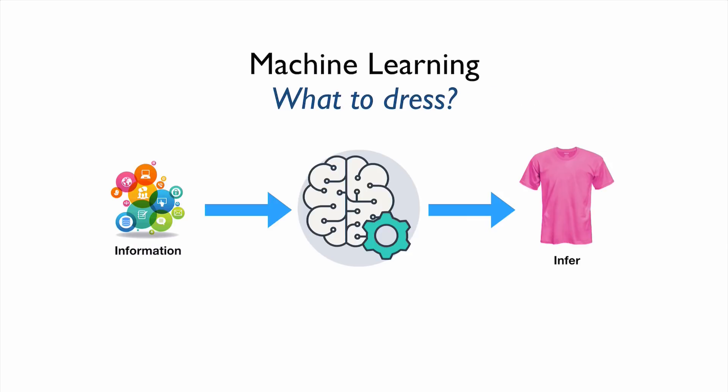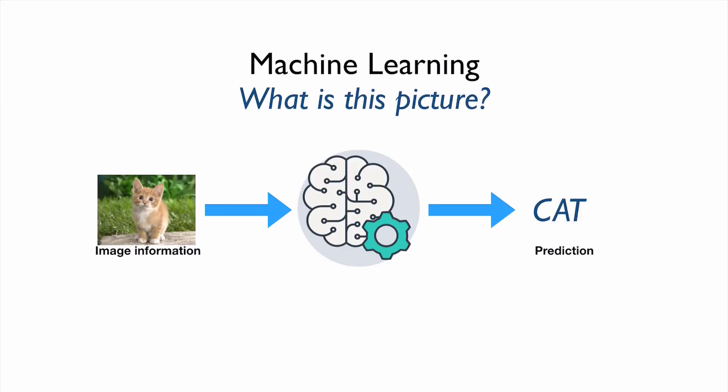Machine learning is exactly the same thing. We want to do exactly the same thing, but using machines. That is machine learning. For example, here, what to dress? We're going to provide a lot of information about it, and then this machine learning can predict or infer the output. Image, same thing. We're going to provide the image information. The machine learning can tell us what the image is about. This is machine learning.